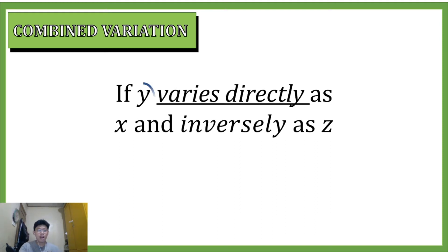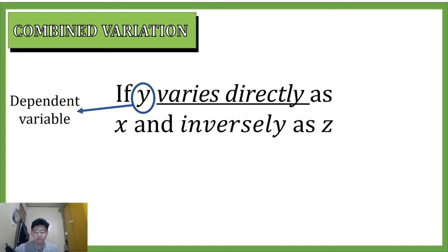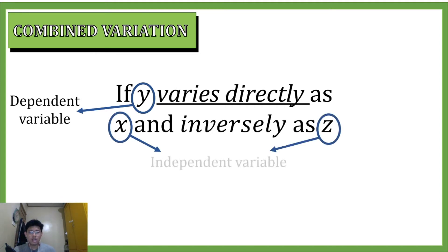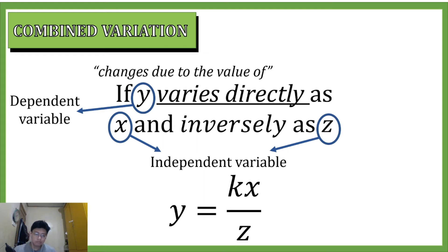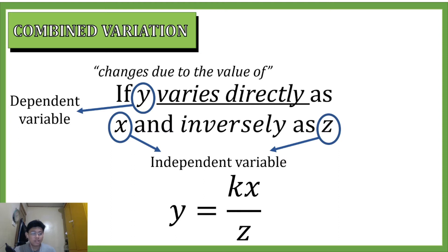We have y as our dependent variable and two independent variables, x and z. The variable y will change due to the values of x and z. When you encounter combined variation, we translate it as y is equal to the constant of variation times x divided by z. When you encounter the word 'directly,' you multiply that variable to the constant; when you encounter 'inversely,' you divide that variable.